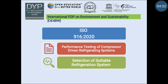The next ISO standard is ISO 916-2020. This document applies to the performance testing of compressor-driven refrigerating systems. Remember, this document does not apply to testing of other refrigeration processes such as vapor absorption process or steam jet refrigerating systems. It also covers testing of the suitability of refrigerating systems for specific uses such as household refrigerators and refrigerated commercial units based on refrigerating capacity.